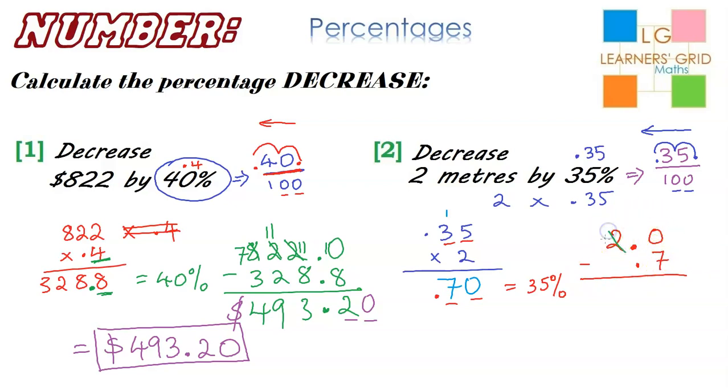0 minus 7 we can't do, so we have to borrow from the units column, and that becomes a 10. So 10 minus 7 is 3. We're up to the decimal point, so we might as well put it in. 1 minus nothing is 1. So now we know that the final answer is